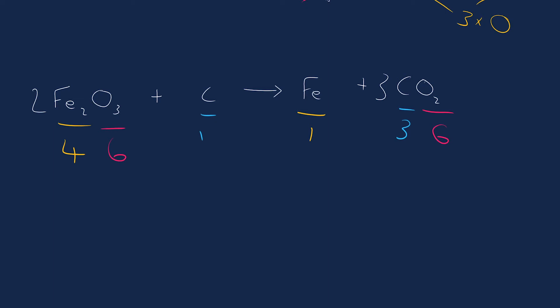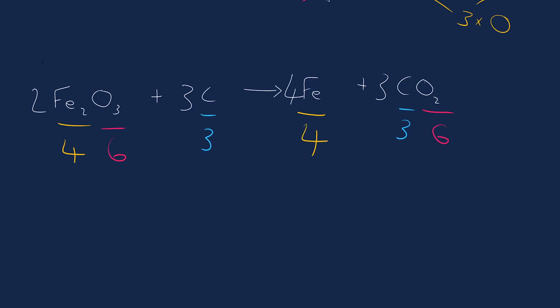Now we just need to balance carbon and iron, and that's straightforward because these atoms are isolated in the equation. For carbon: we only have one on the left, but I can just add a three — now we have three carbons and carbon's balanced. For iron: we have four on the left versus one on the right, and iron is alone on the right, so I add a four. Recount confirms four iron on each side. So this equation is balanced.